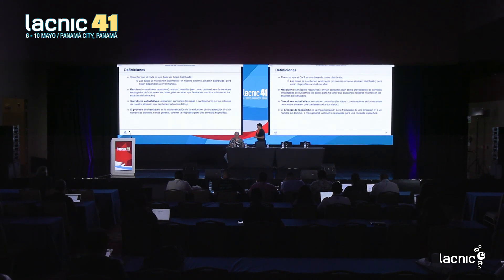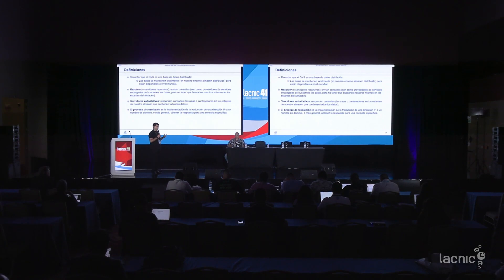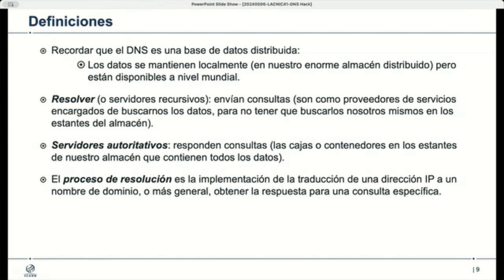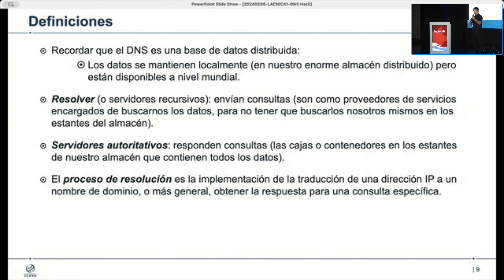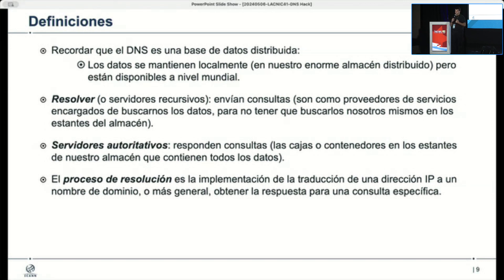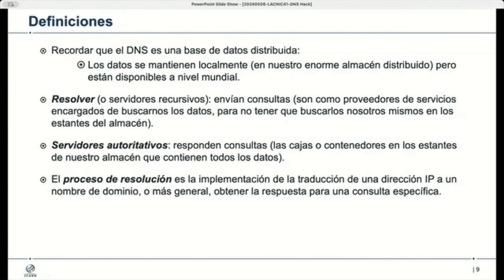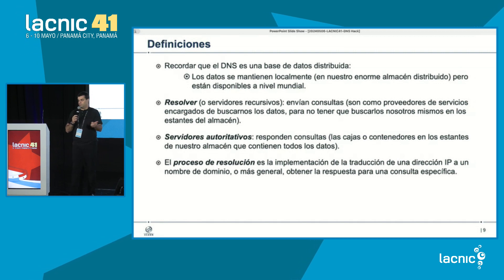Los servidores recursivos tienen lo que llamamos memoria caché. Es un espacio típicamente en la RAM del servidor que almacena cada vez que el recursivo averigua algo, toda esa información que va recibiendo la almacena en memoria durante un tiempo. La función principal es que si otro cliente vuelve a hacer la misma pregunta, o una pregunta que contiene información que el servidor recursivo ya averiguó antes, no tiene que salir a buscarla porque ya la tiene en memoria, la saca directamente y eso optimiza o acelera mucho el tiempo de búsqueda.